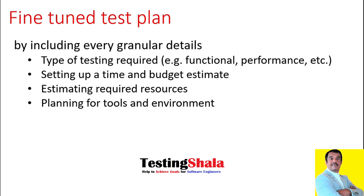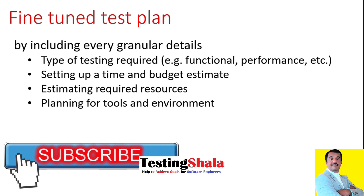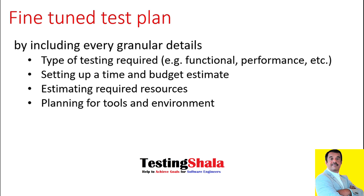What are the total resources required, what are the risks, what are the mitigations for every anticipated risk, and what are the tools and environment — every detail should be clearly documented in the test plan. That would help us track the overall testing activity very effectively. If you are doing the right planning, then execution becomes very easy, and if execution becomes easy, then we can definitely stop as many defects as possible from moving into production.